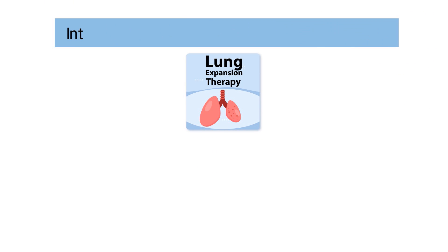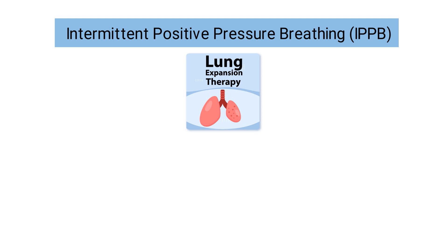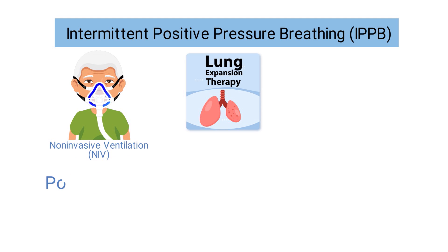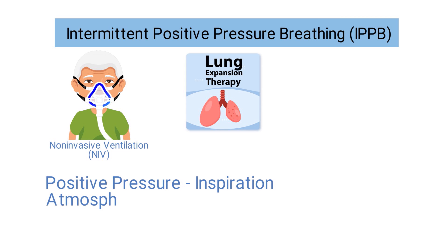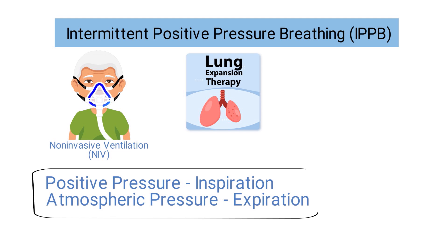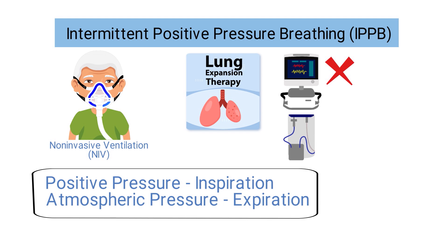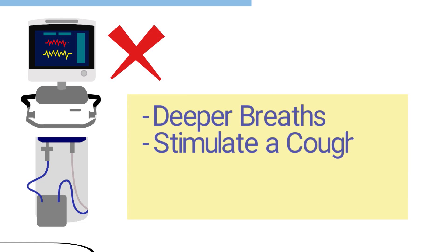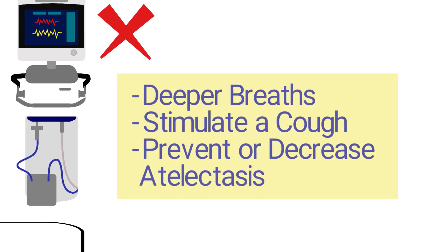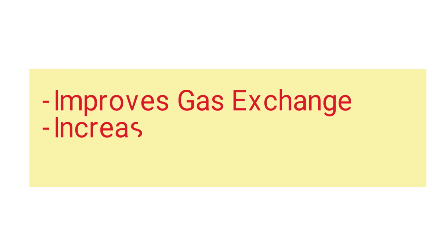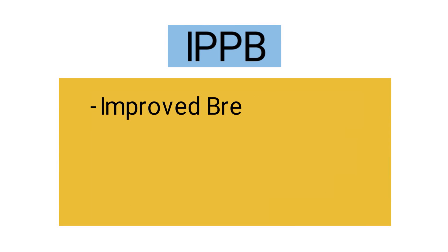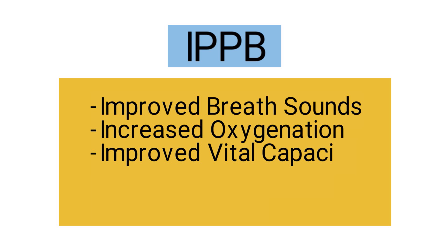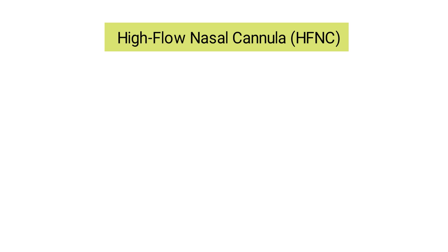Another type of lung expansion therapy is IPPB, or intermittent positive pressure breathing. It's a type of non-invasive ventilation that delivers positive pressure during inspiration and then returns to atmospheric pressure during expiration. The machine is capable of providing full ventilatory support, but that is not its intended use. IPPB was designed to help patients take deeper breaths, stimulate a cough, and prevent or decrease atelectasis. It achieves this by improving gas exchange, increasing lung compliance, and reducing the patient's work of breathing. Other potential outcomes include improved breath sounds, increased oxygenation, improved vital capacity, improved chest X-ray, and a stronger cough.